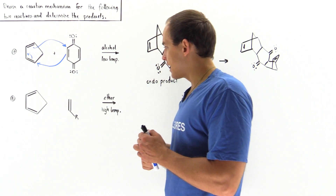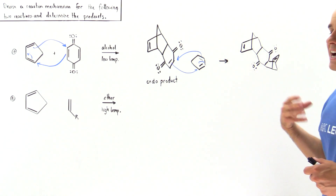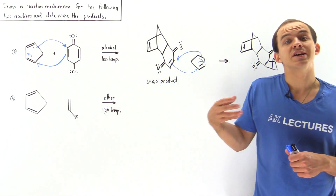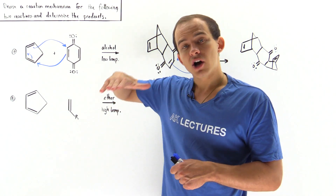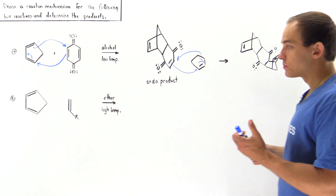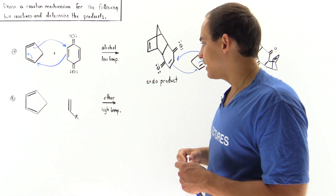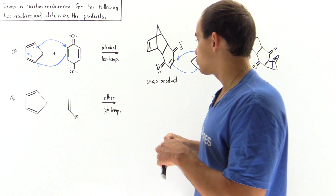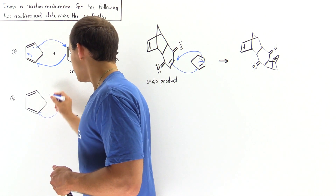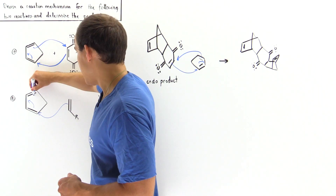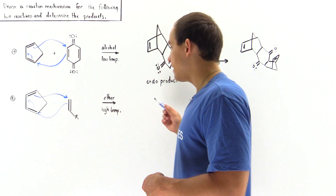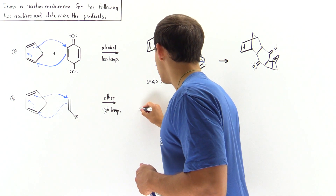Now let's examine the second reaction, reaction B. This is under a high temperature condition, which basically implies that our exo product will form because we're going to have enough energy to overcome the higher activation energy for the exo product formation as compared to the endo product. So this is once again our 1,3-diene reacting with our dienophile. This pi bond attacks this carbon, displacing this pi bond, and this attacks this.